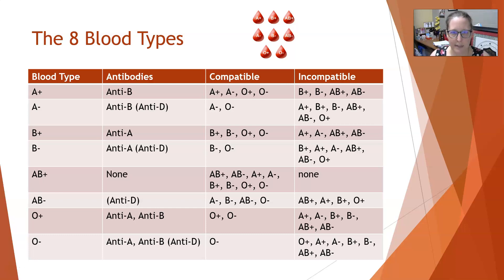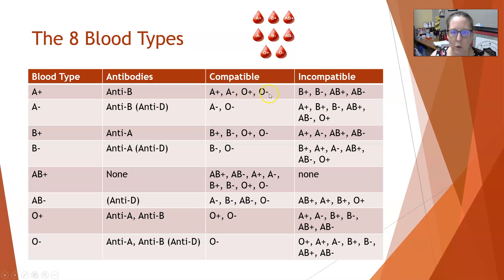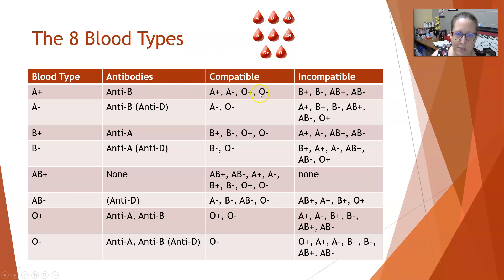Let's review the eight blood types. Starting with A positive: patients will have anti-B antibodies in their serum and they can receive A positive, A negative, O positive, and O negative blood. We're looking at what blood they could receive as patients needing blood. They are incompatible with B positive, B negative, AB positive, and AB negative because of the B antigen that would react with their anti-B antibodies.